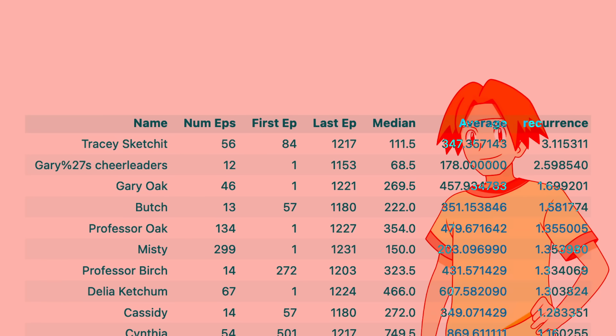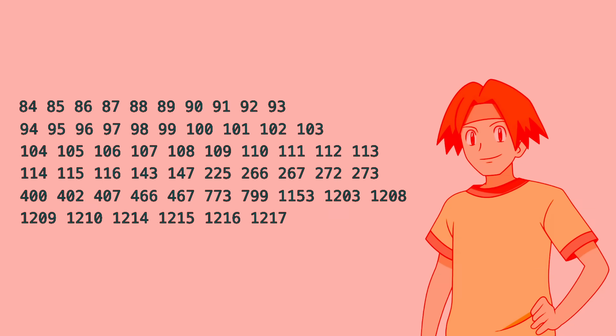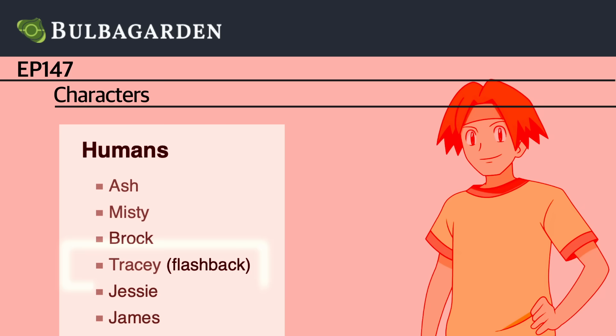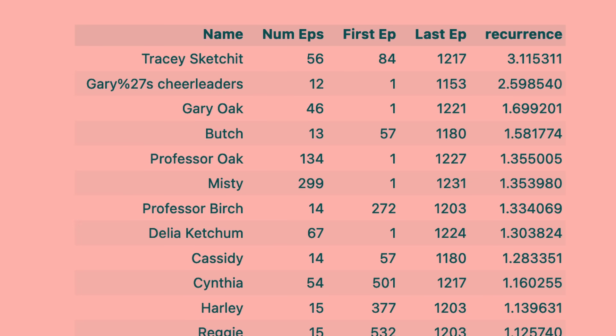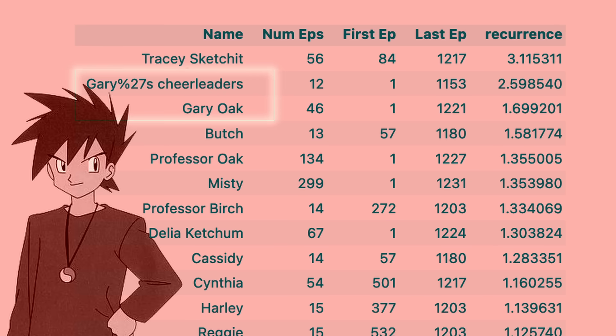Tracy is the character with the highest recurrence. Here's a list of the episodes he's in. He appears pretty consistently between episodes 84 and 116, and then occasionally shows up through the rest of the series. He's not always physically in the episode — in 147 he appears as a flashback, and in 773 he is listed as a screen. We also see Gary's cheerleaders and Gary in second and third. It surprised me that the cheerleaders beat out Gary here, but I think that has more to do with their lower number of appearances skewing the statistics. Either way, no sign of Paul here — so Gary better rival confirmed.